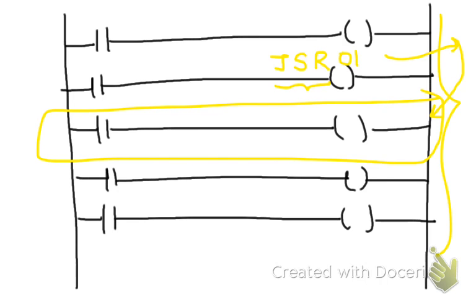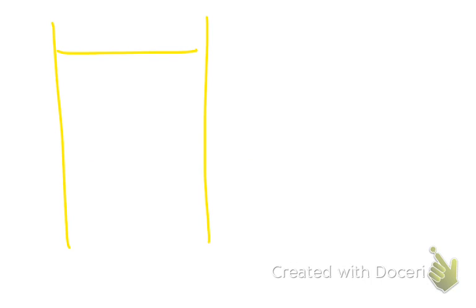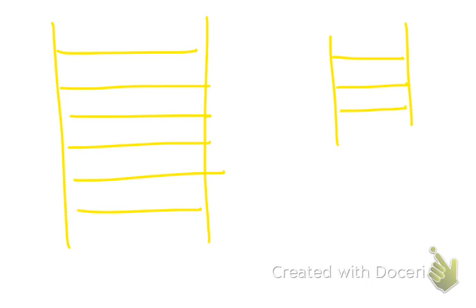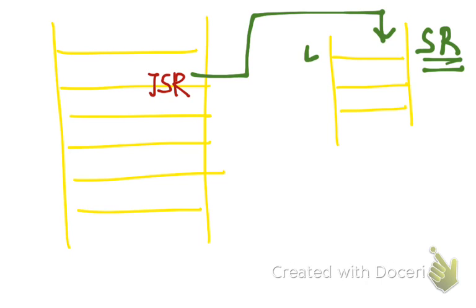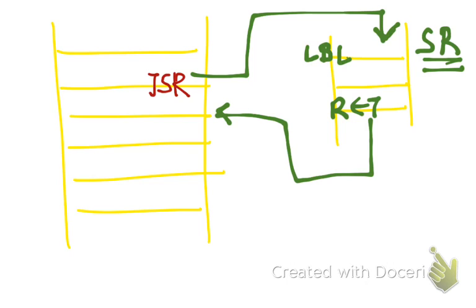To help you understand better, here is your main program and here is a subroutine. In the main program I have created a jump to subroutine. It jumps to this subroutine, which has the label here. And in this subroutine, it has something called return. After executing from the label to the return in the subroutine, it comes back to the main program to the line after your jump to subroutine.